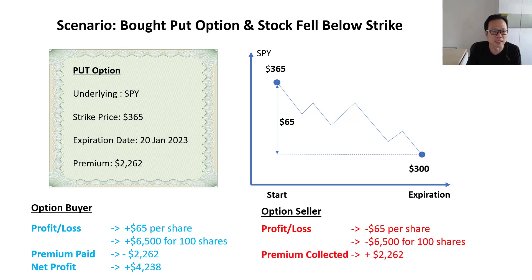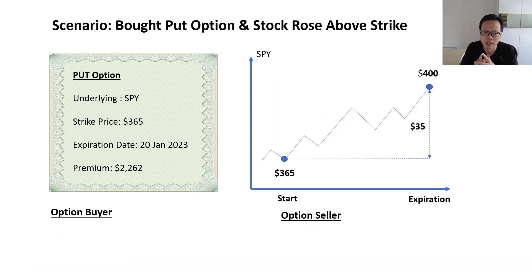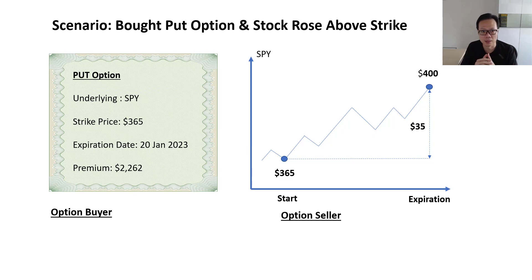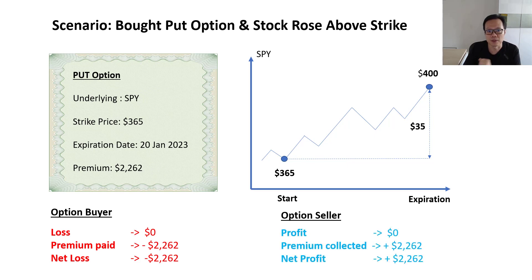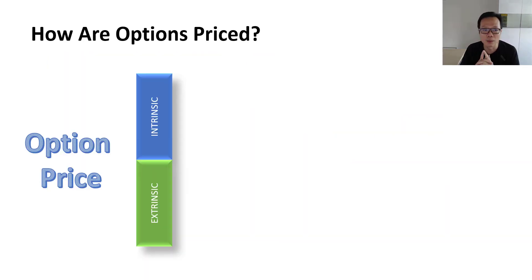What if the price of SPY rises to $400 instead? In this case no event is triggered because you would not exercise your put — it doesn't make sense to. Your loss is simply the premium you paid, and the option seller gets to keep that premium safely in his pocket.